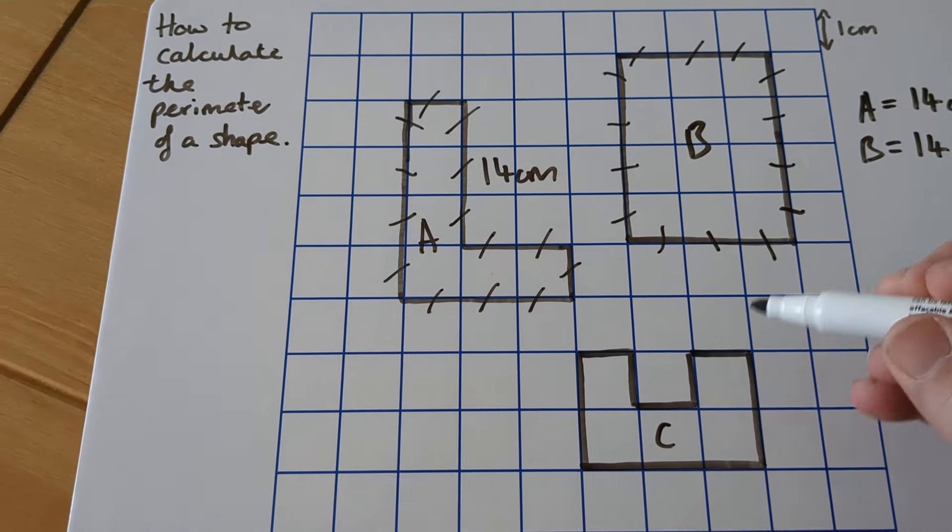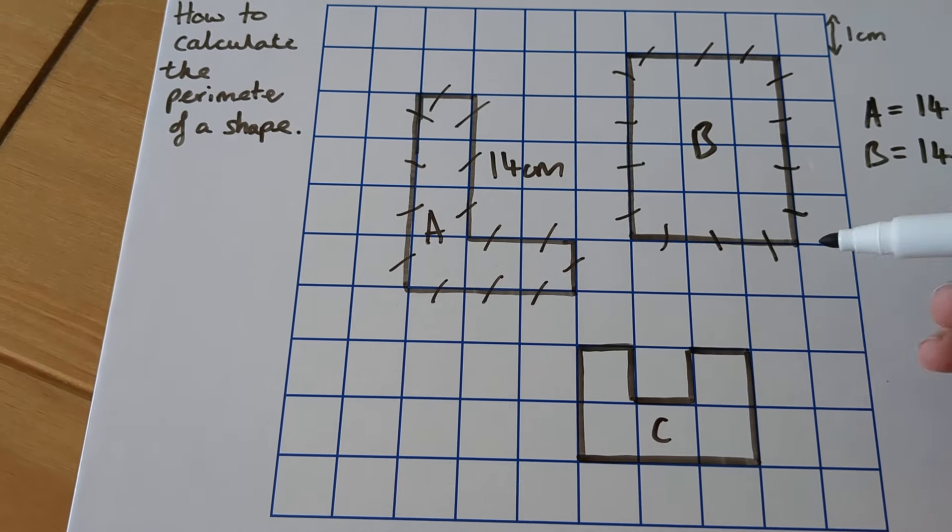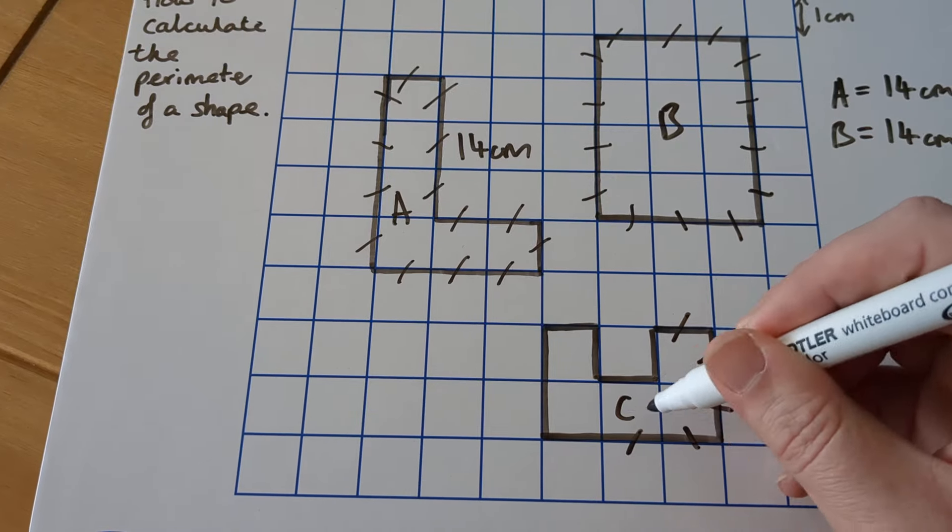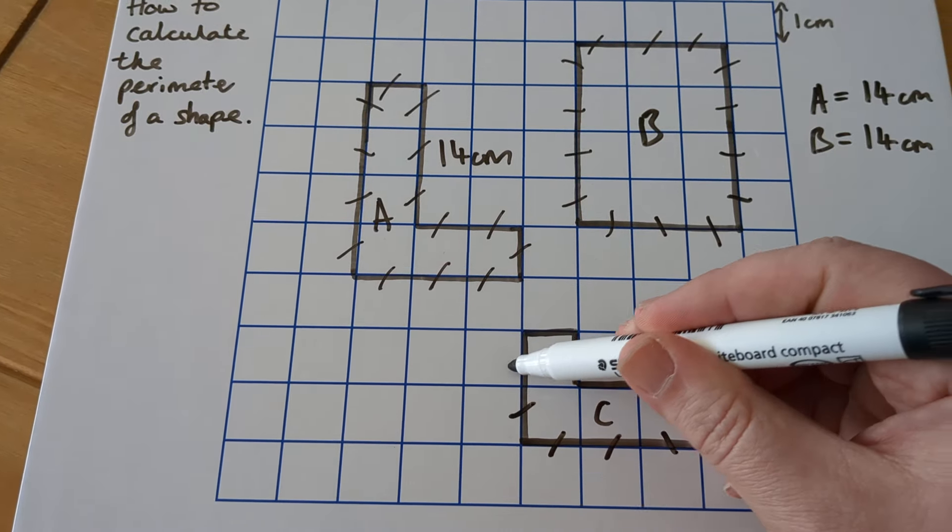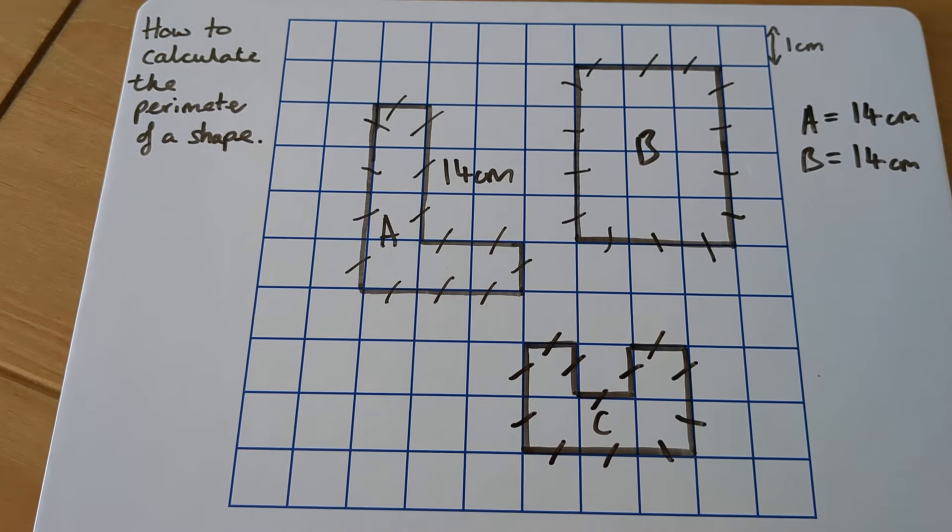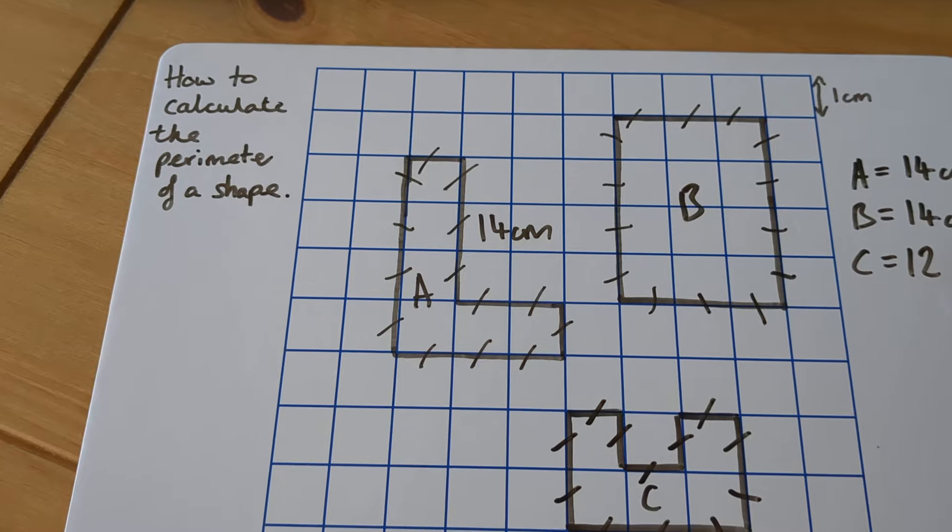And C. We can start anywhere, but don't forget that this one goes inside as well. So we've got 1, 2, 3, 4, 5, 6, 7, 8, 9, 10, 11, don't forget that one, 12. So this time, C, the perimeter is 12 centimeters.